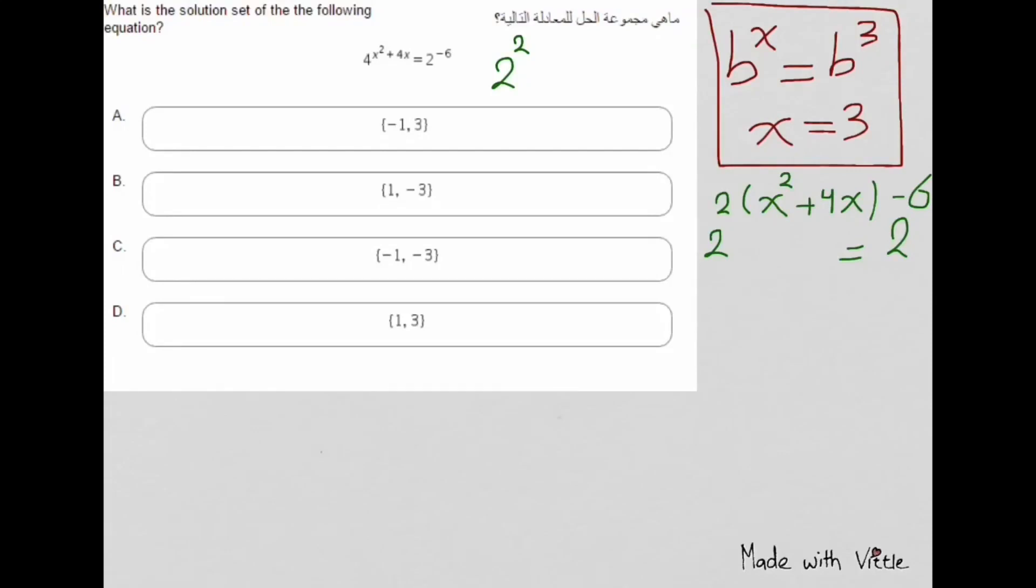Now since 2 equals 2, that means the powers are equal. So 2 times the term x squared plus 4x equals negative 6. To make the equation more simple, we'll divide both sides by 2. We'll cancel 2 with 2, and what remains is x squared plus 4x equals negative 3.